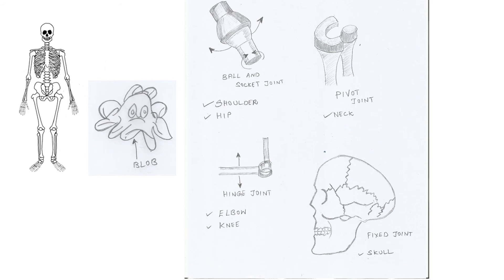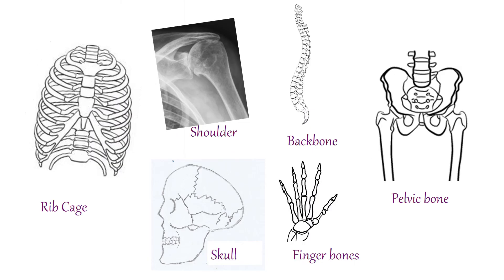How do you think we will look if we don't have bones in our body? We would all look like a big blob. These bones form a framework to give shape to our body, and this framework is called the skeleton. The rib cage protects internal parts like the heart and lungs. The backbone is made up of very small bones, and the rib cage is connected to these bones. The pelvic bone helps us to sit. Finger bones help us to move our fingers and hold things. In our skull, we have immovable joints called fixed joints.